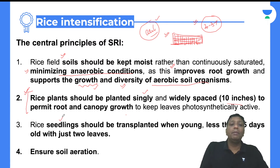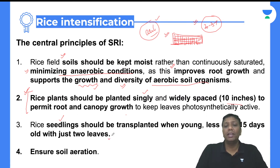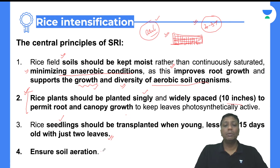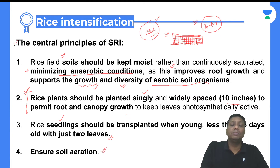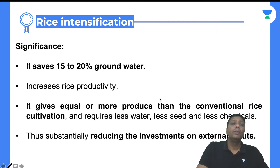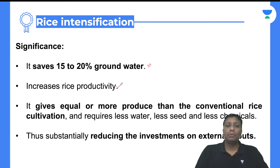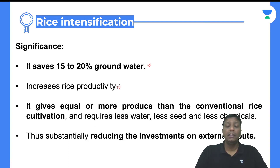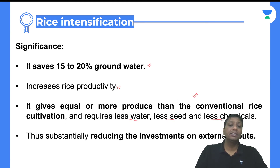Rice seedlings — meaning plants from the beginning stages — should be transplanted when young, less than 15 days old, with just two leaves. So from the nursery to the nearby planting area, you must know about soil conditions. The significance of SRI: 20 to 50 percent less water is used, rice productivity increases — even where it was stagnant or declining in India. It gives equal to or more produce than conventional rice cultivation, requires less water, less seeds, and less chemicals, reducing investment on external inputs.